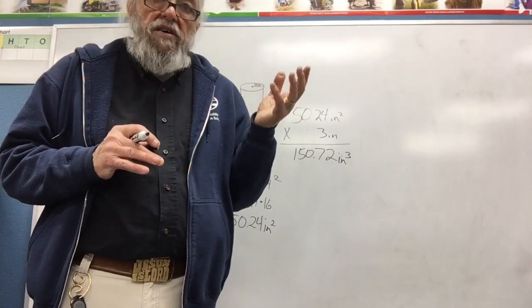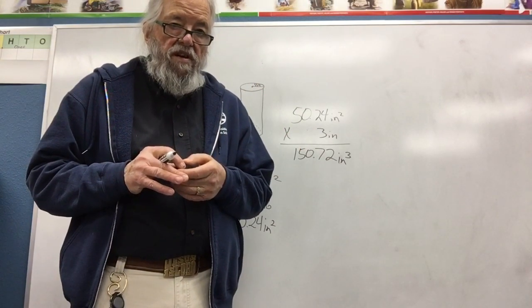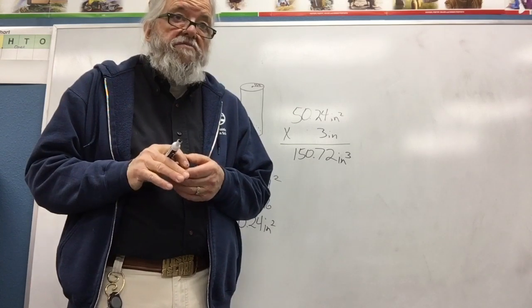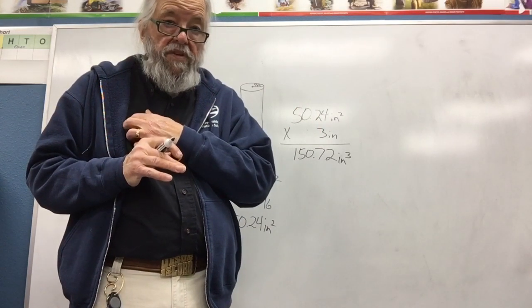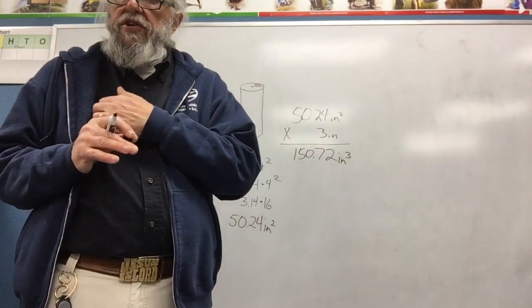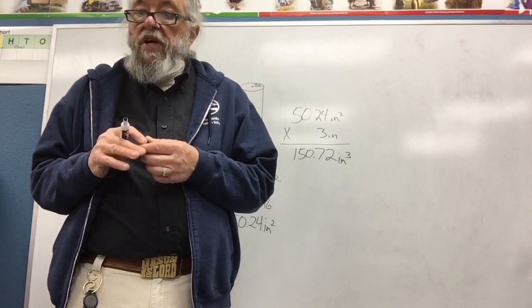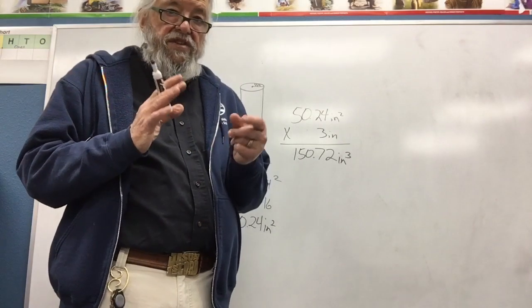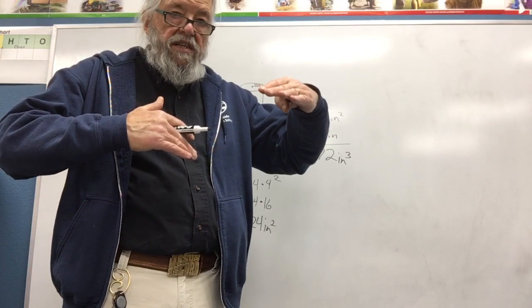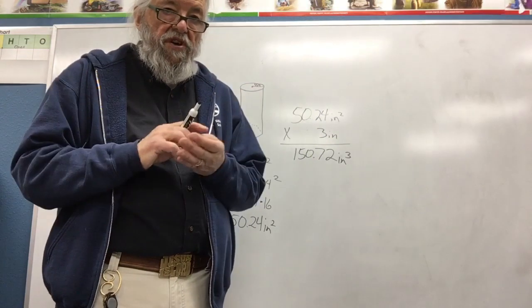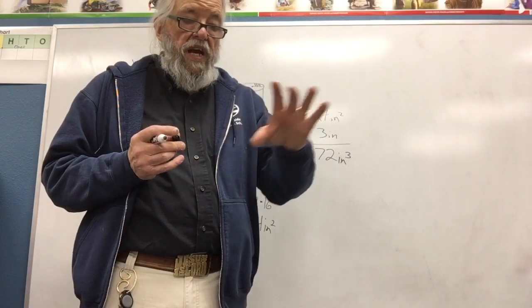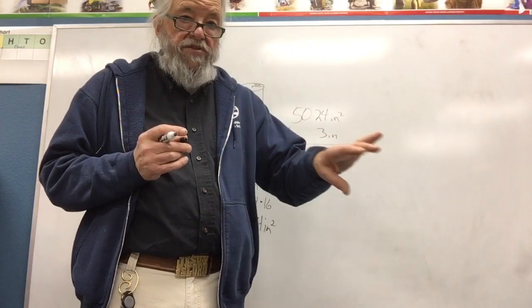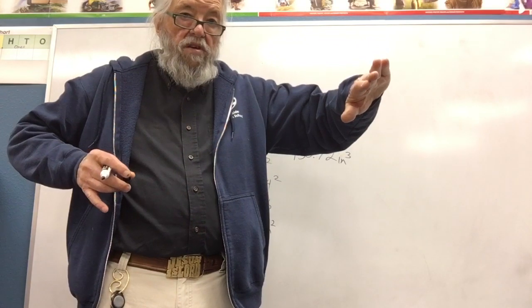Now we're looking at surface area of a cylinder. Some people still get mixed up between surface area and volume. In the middle of page 419, they took the cylinder and laid it out in its net so you can see what the surfaces are. The surfaces that make up a cylinder are two circles, and then the lateral or curved surface — when you cut it and lay it out flat, it's a rectangle.